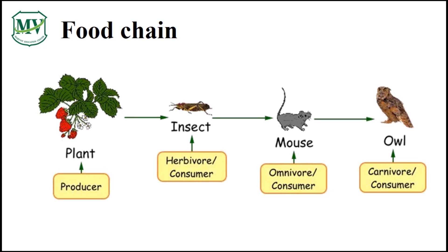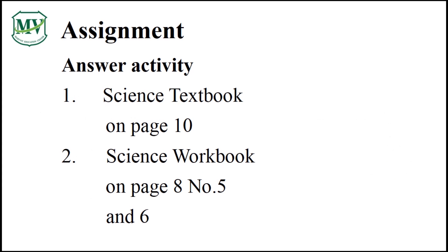What is the starting point of the food chain? It always starts with a producer. You're right — it's the strawberry plant. The plant is eaten by the insect, which in return is eaten by the mouse, and finally the mouse is eaten by the owl. The three animals are consumers; only plants are producers.